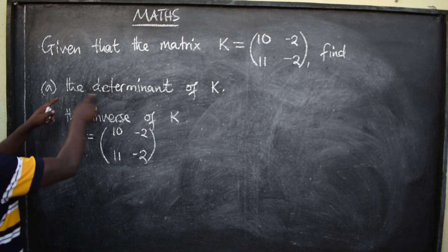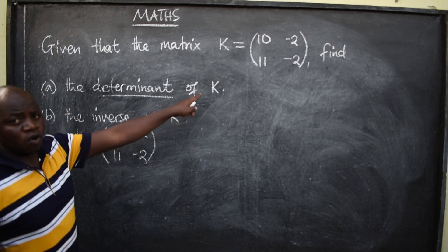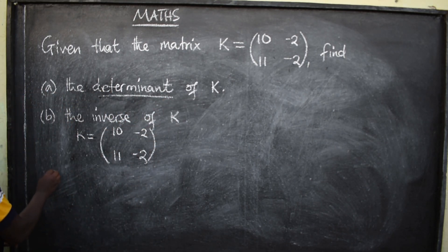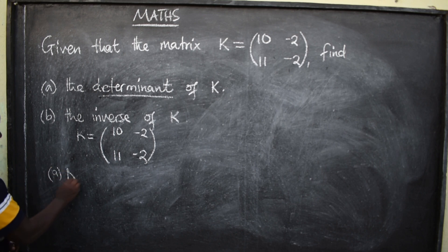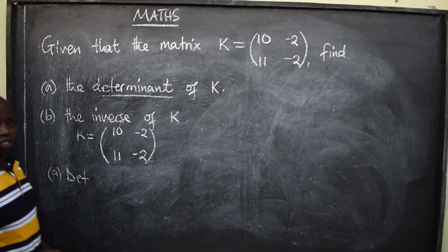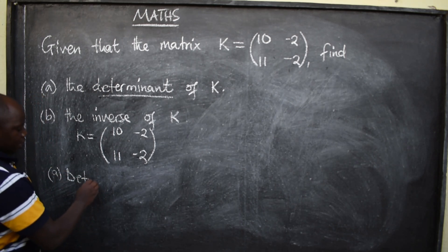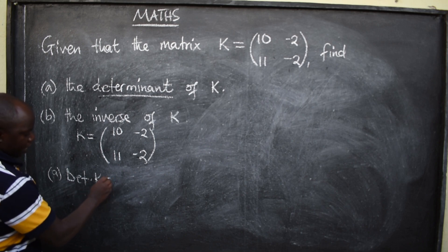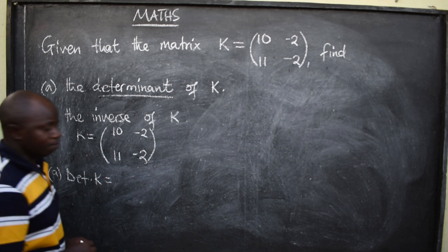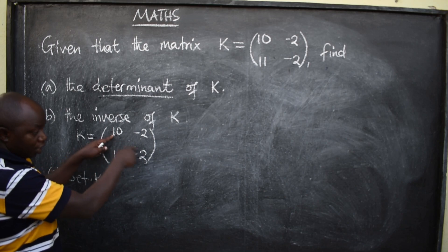The first part is to find the determinant of the matrix. So, determinant of the matrix, of a 2 by 2 matrix, in this case, determinant of K is given by...